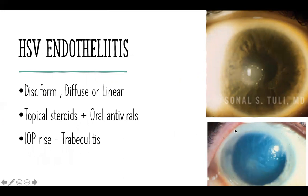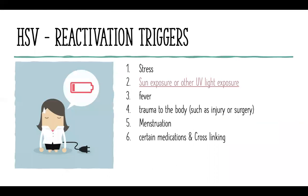In endothelitis, you have two types: disciform and diffuse or linear endothelitis. There is a role for topical steroids and prophylactic dosage of antivirals. Always be careful to check IOP in endothelitis, because underlying trabeculitis can cause an IOP rise — manage with anti-glaucoma medication. Once the inflammation is down, the IOP will also come down.